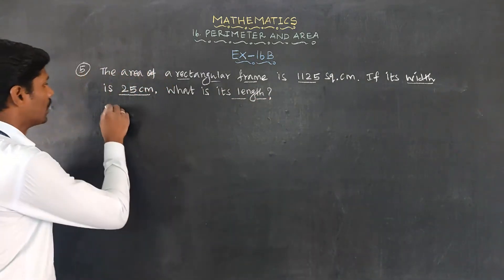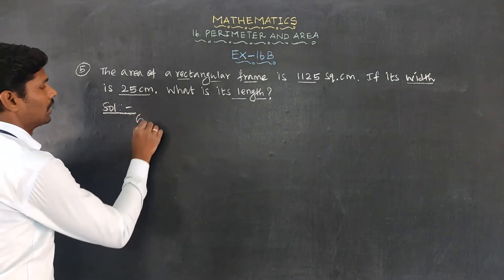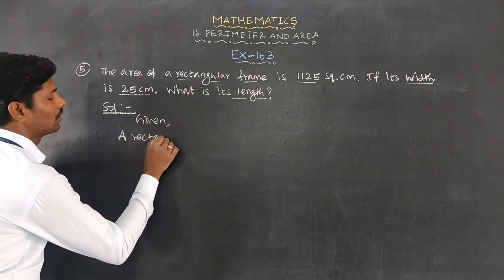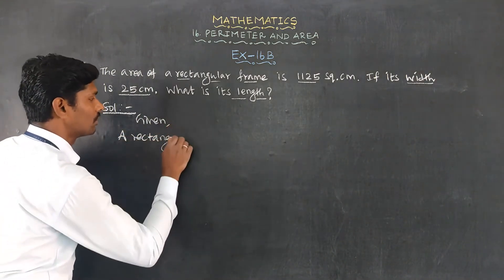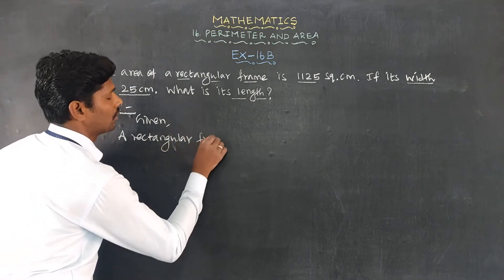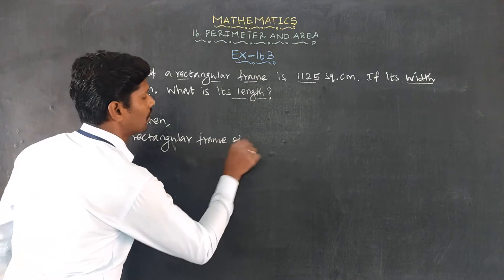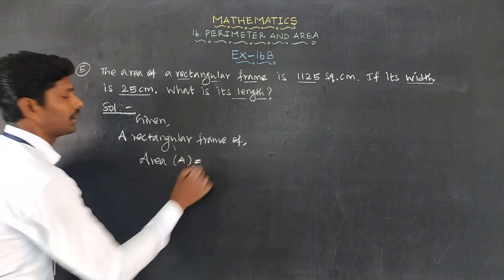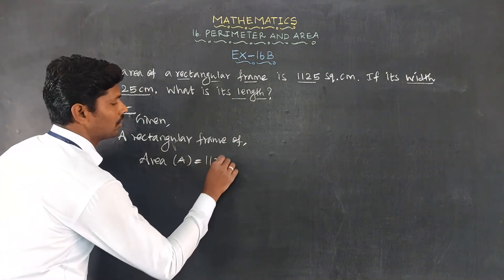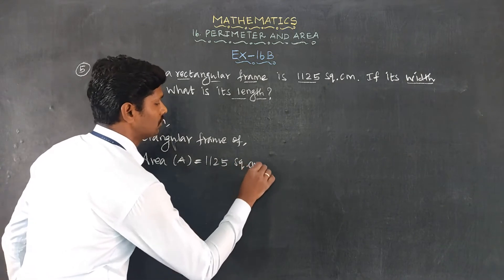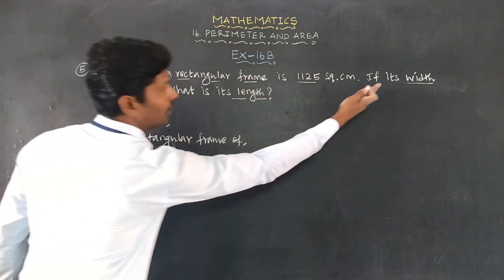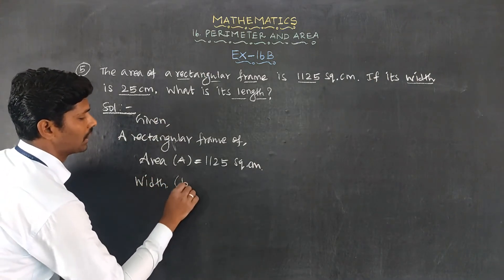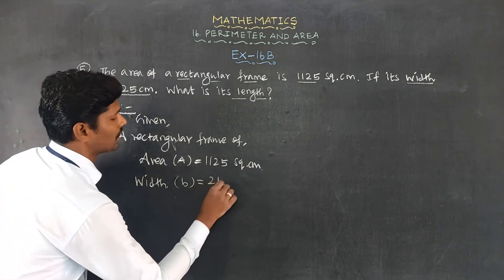Solution: Given a rectangular frame of area A is 1225 square centimeter, then width or breadth B is 25 centimeter.